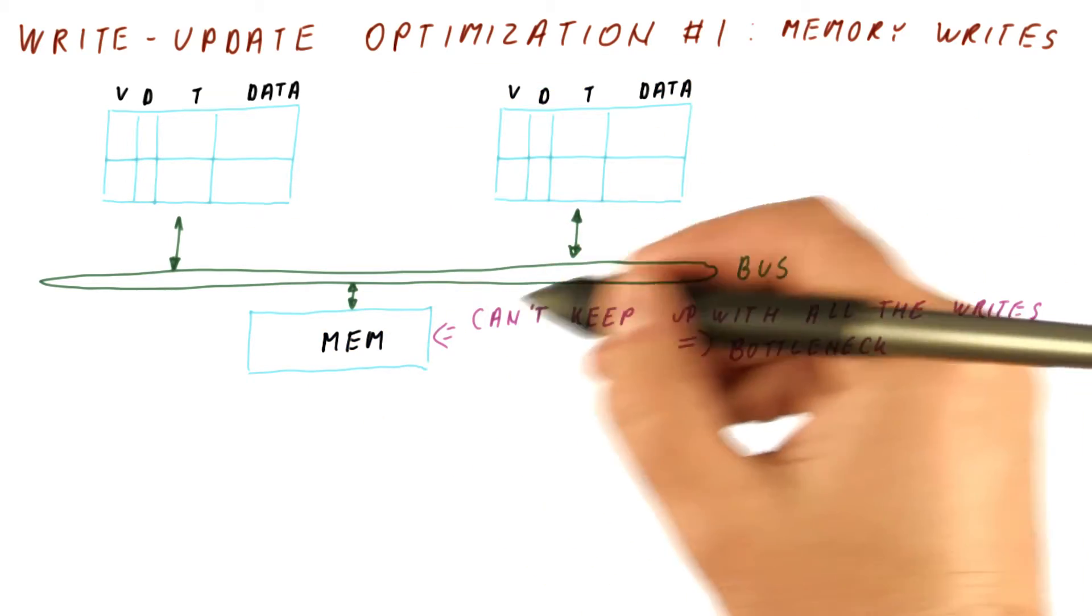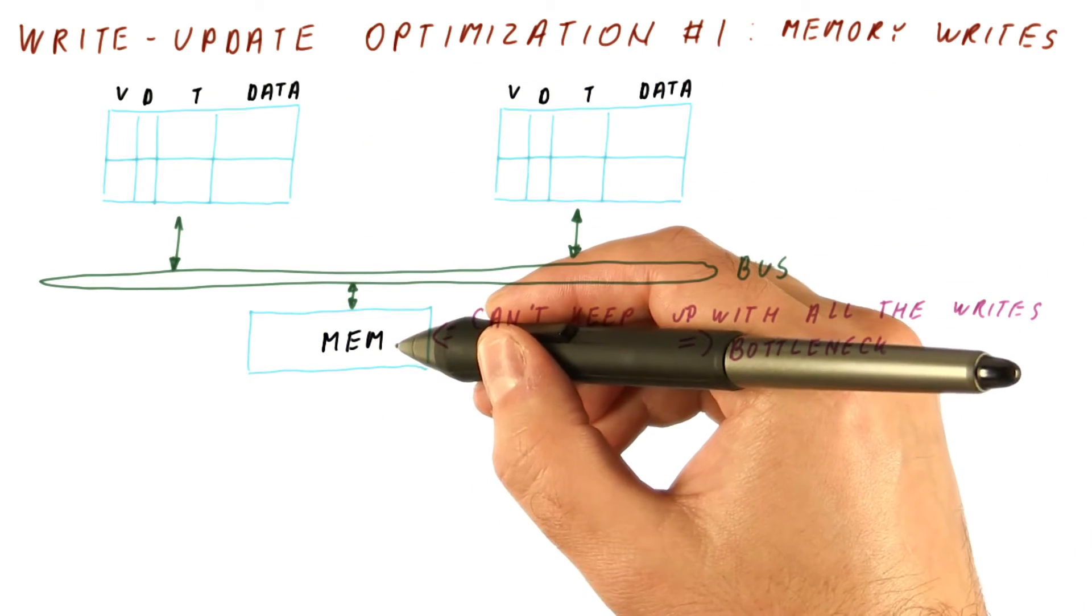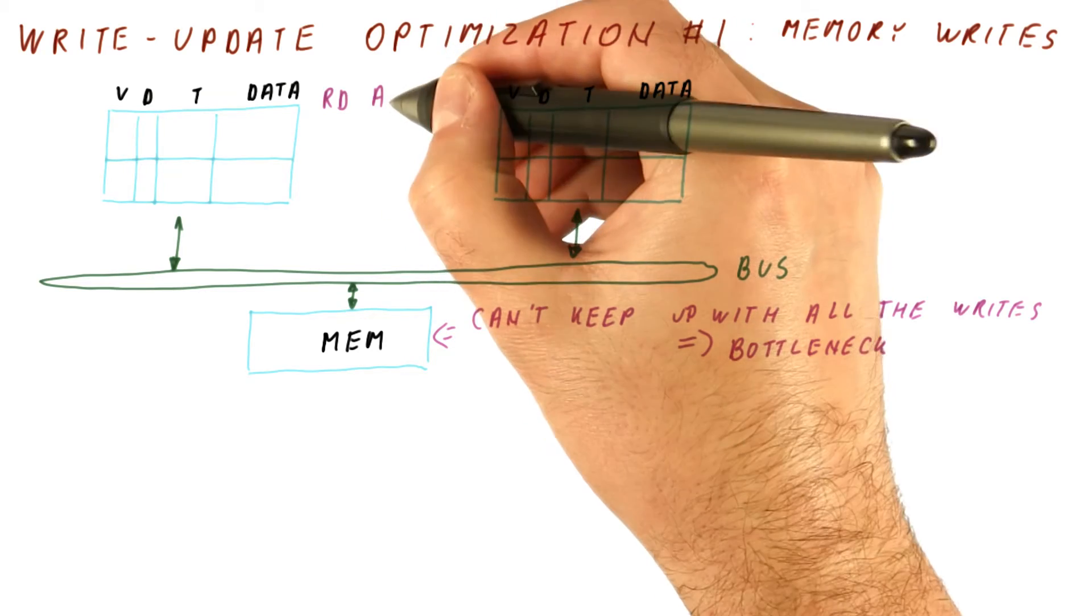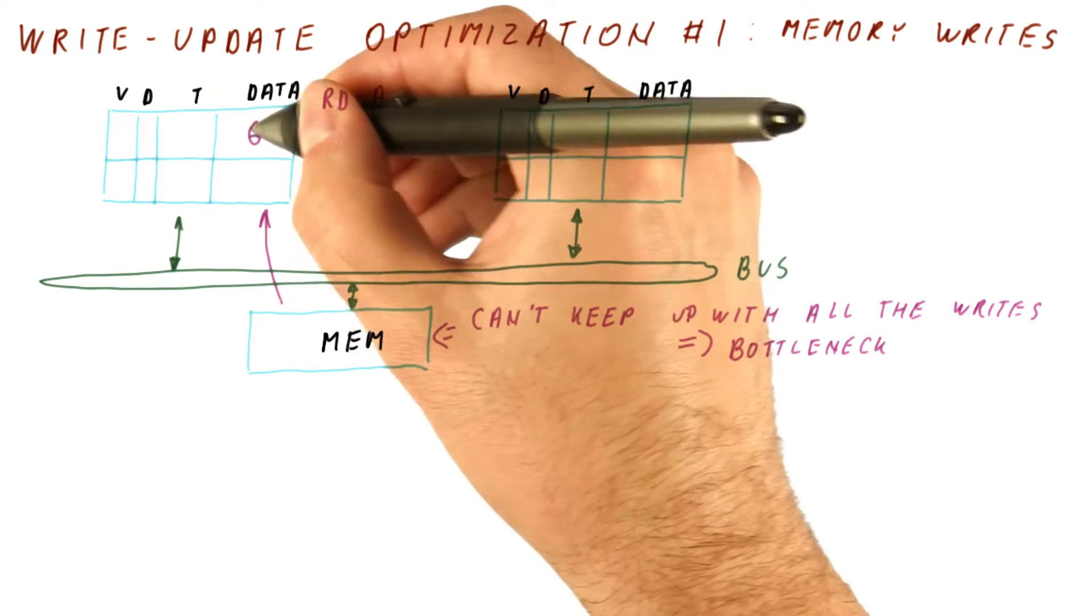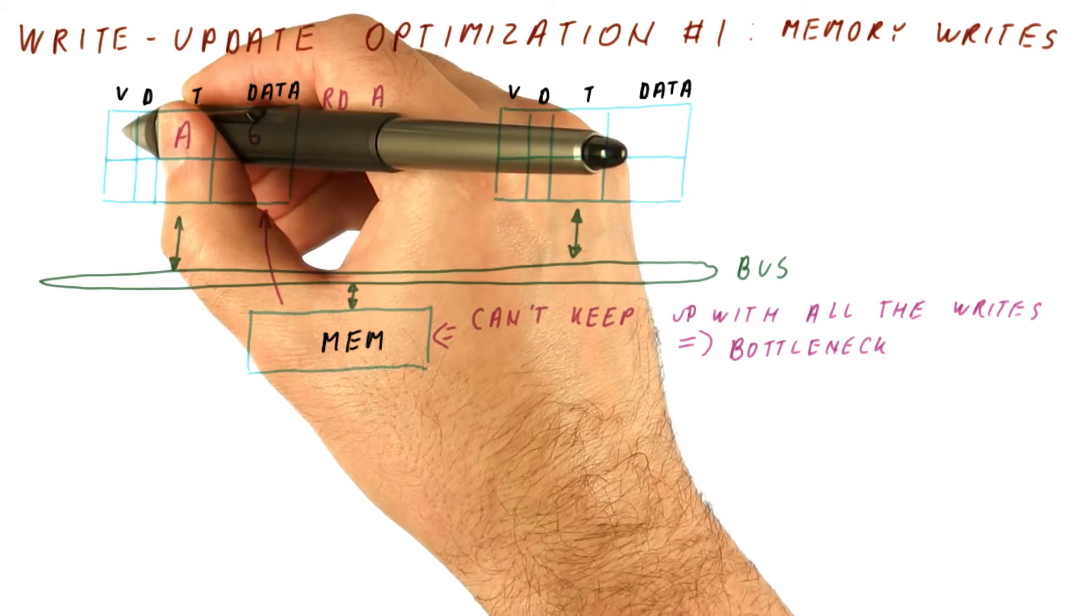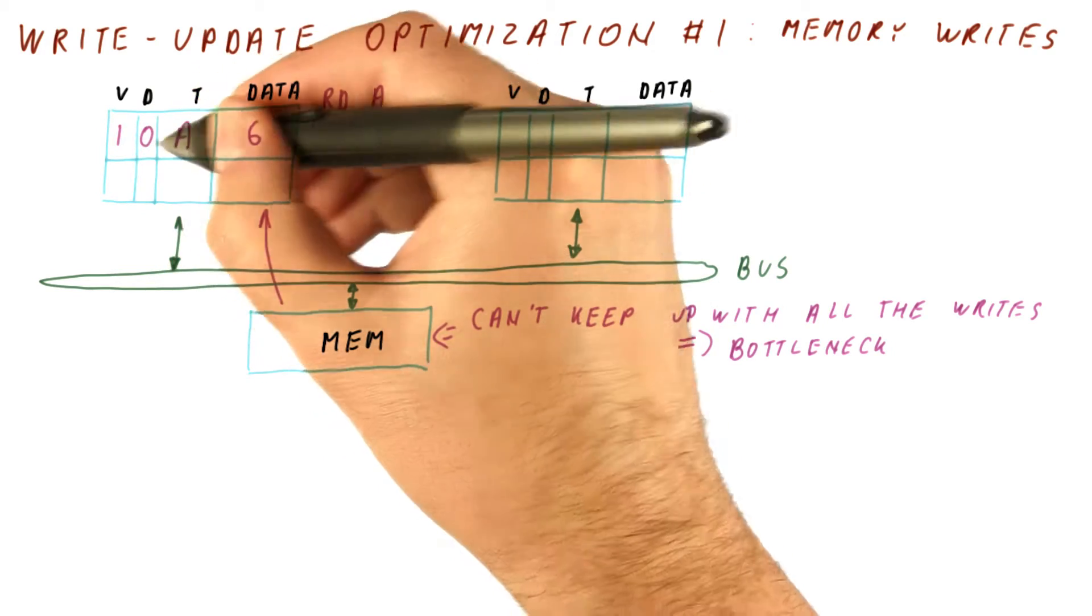So now let us see how this works and how it avoids memory writes. Suppose that this cache reads A. It gets this value from memory, let's say it's 6, the tag will be A. It's valid and it's not dirty.